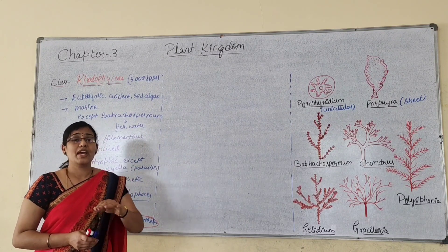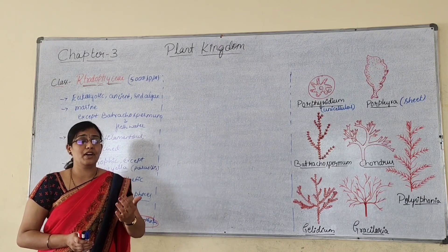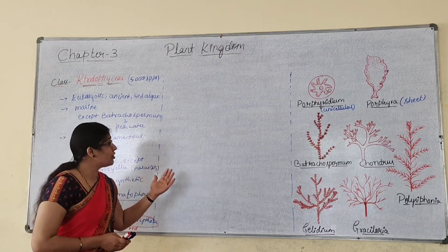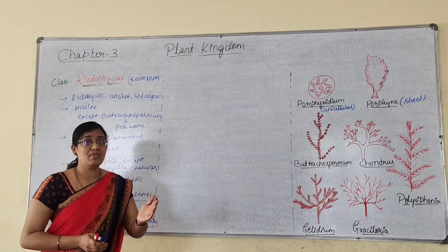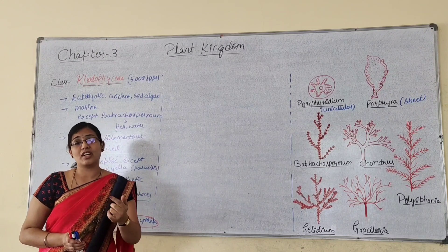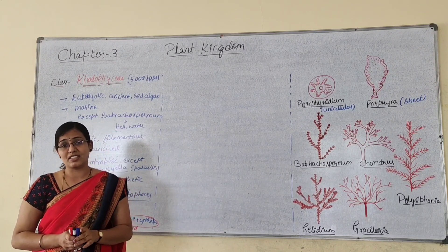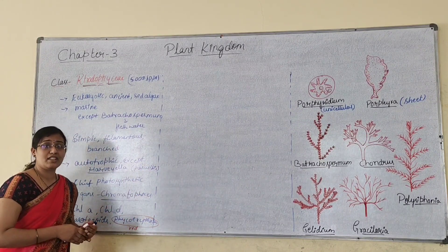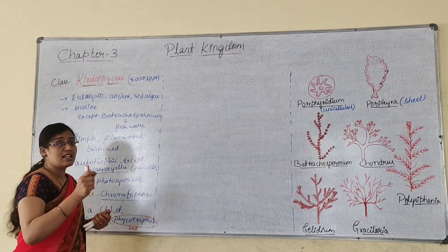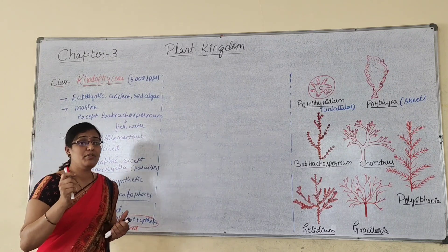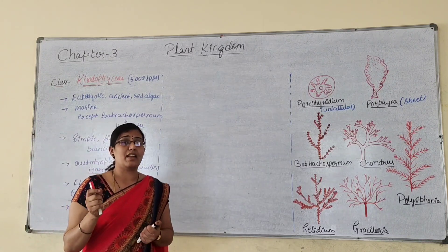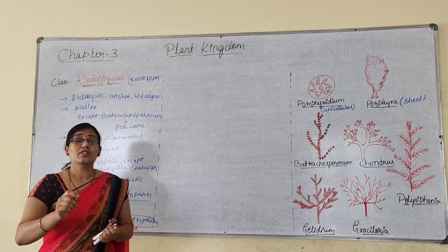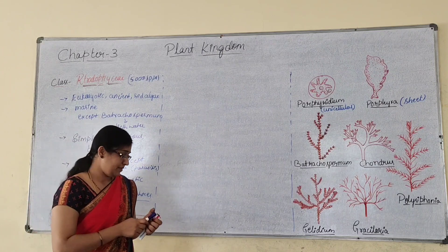Whereas other photosynthetic members are not found at the deepest of the sea. These red algae are found at the deepest because the blue and green wavelengths they absorb have the capability to reach great depth.